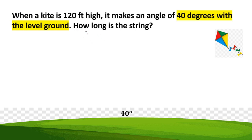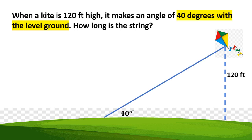Word problem number two: When a kite is 120 feet high, it makes an angle of 40 degrees with the level ground. How long is the string?